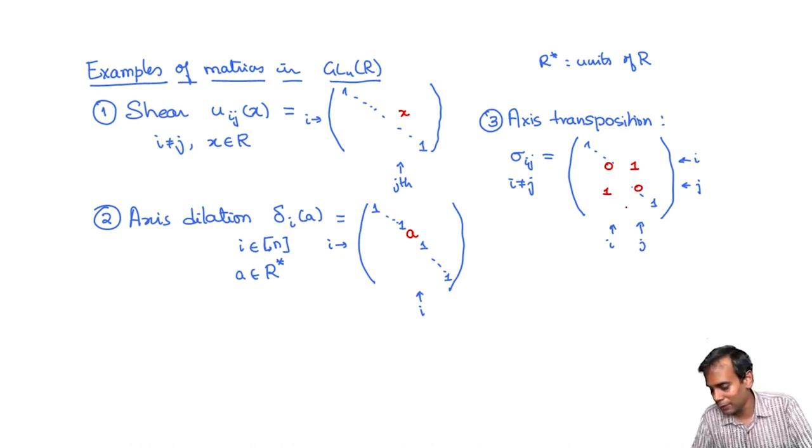If you are wondering why these names are what they are, you can try to understand what these matrices do when you just look at two by two real matrices, what these matrices do to the Euclidean plane.